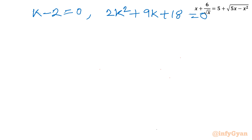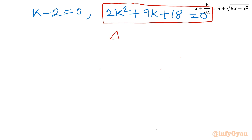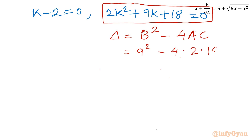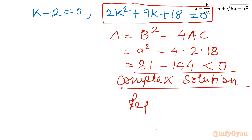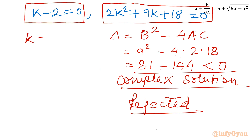Let us consider the second factor first. I will calculate the discriminant of 2k² + 9k + 18 = 0. Delta = b² − 4ac = 9² − 4(2)(18) = 81 − 144, which is negative. The conclusion is complex solutions, so we reject this. The first factor gives k − 2 = 0, which we accept.